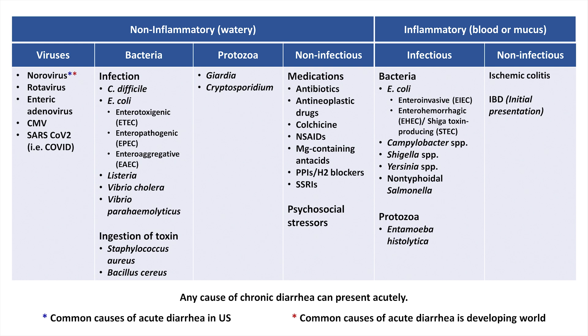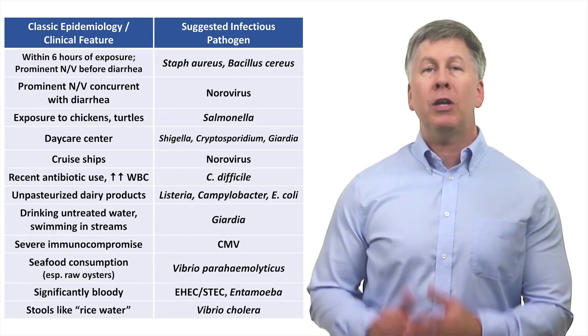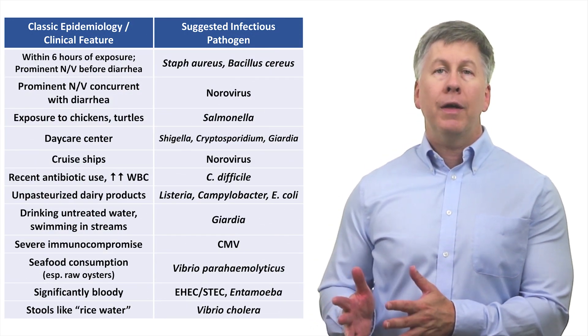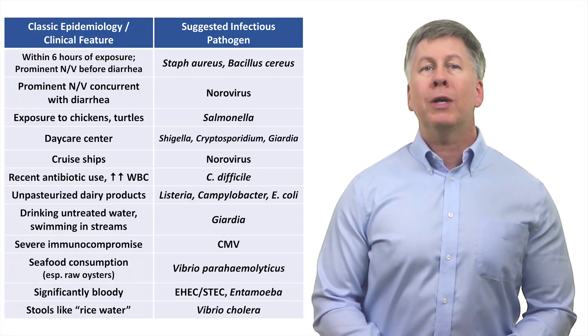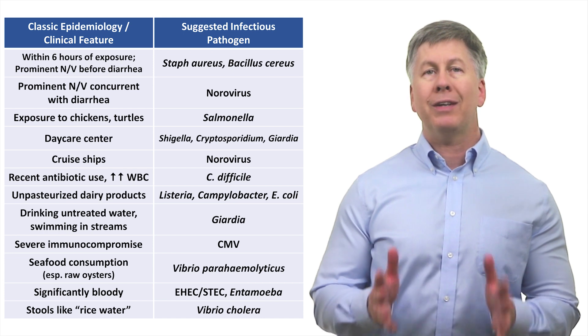Other common causes are the various subtypes of E. coli and Campylobacter. In the developing world, other particularly notable pathogens include Vibrio cholerae, Shigella, and Entamoeba. An identification of the specific pathogen causing acute diarrhea is not always critical, but there are some classic associations between epidemiology and clinical features and a suggested organism. I won't read through this chart for you, but you can pause the video and read through it if you'd like.